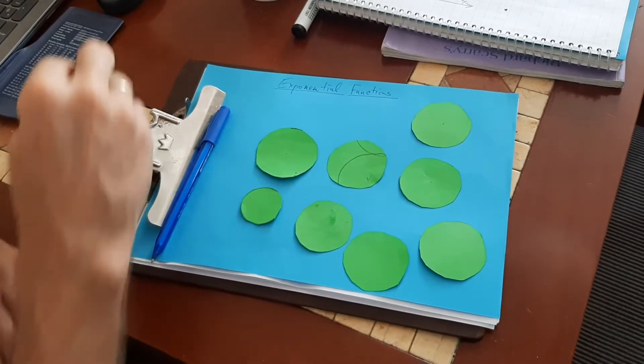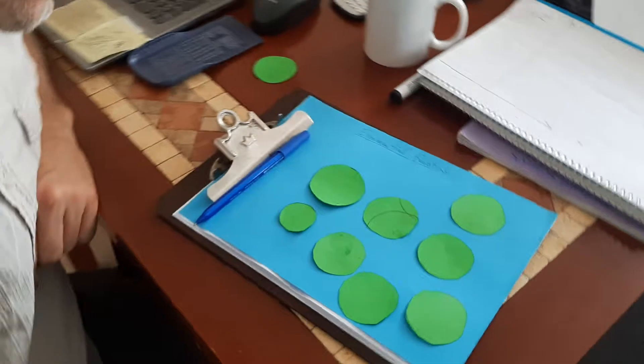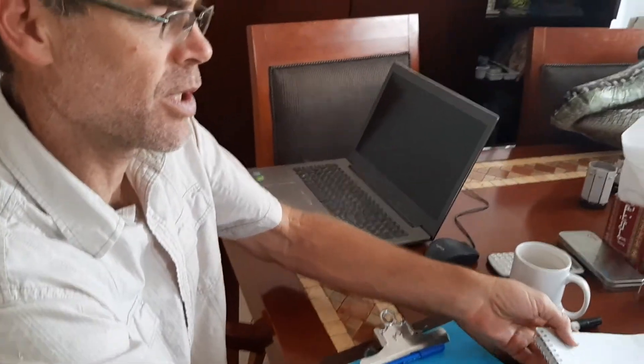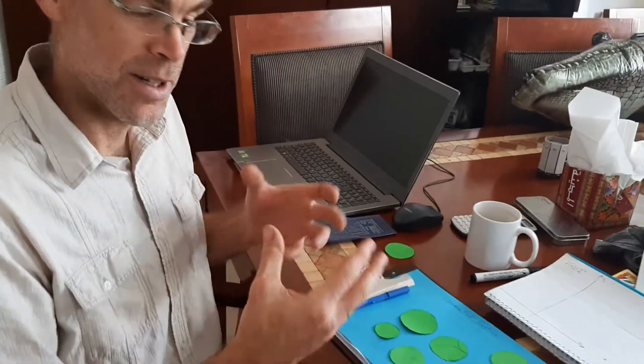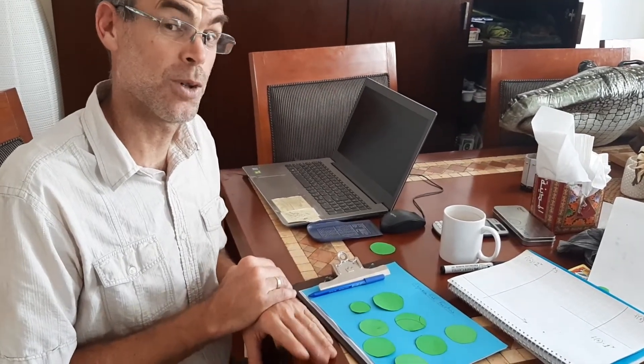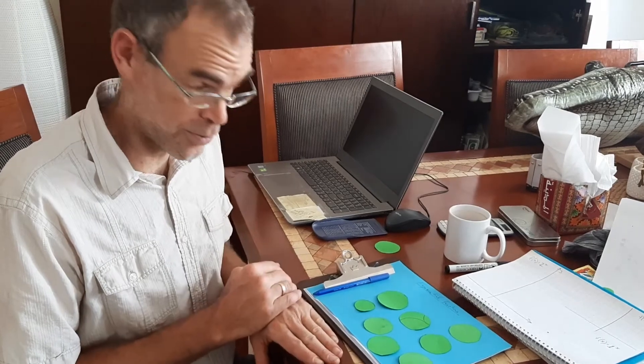And the riddle is, on day 50, the pond is completely full of lily pads for the first time. Now, on what day was the lily pad pond half full? This lily pad, they double every night. On the 50th day, the pond is completely full. On what day was the lily pad pond half full?